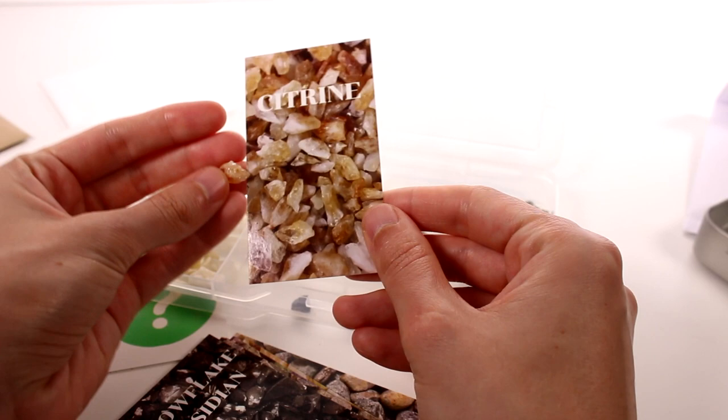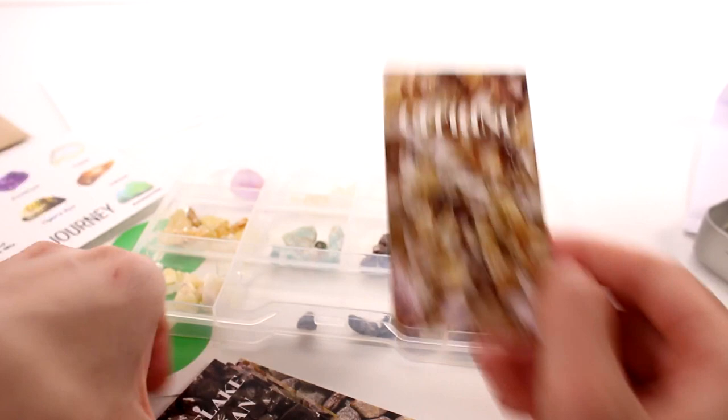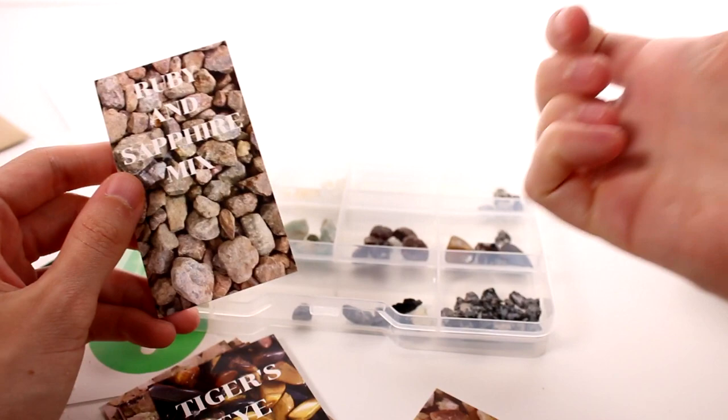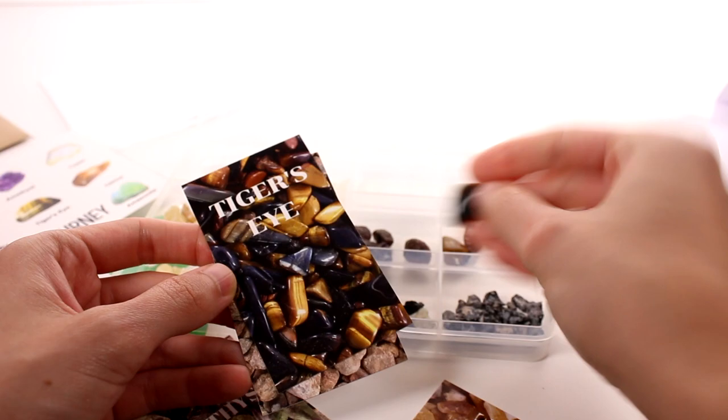But I do like how we have these cards here. So this definitely just looks like the citrine, right? And I'm still unsure what these wider ones are. But let's see, the ruby and sapphire mix definitely are just like the more rock looking ones, you know? And the tiger eye ones can be a few different colors as you can see. So that's cool.